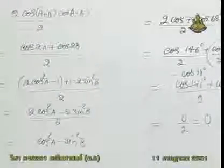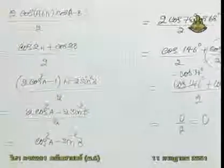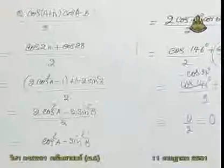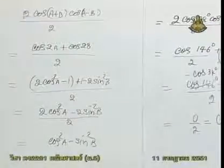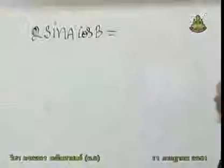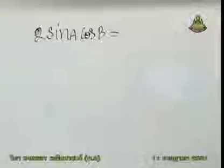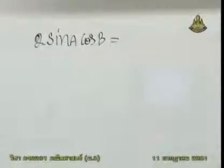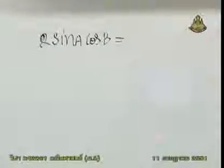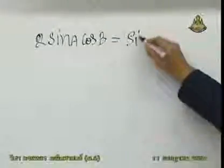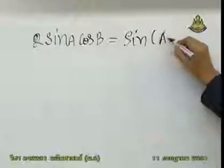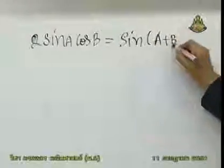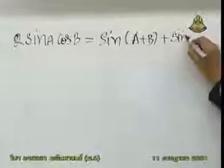สรุปหลักหลักก็คือ เราต้องให้ได้ว่า 2 sin a cos b ก็คือ sin(a+b) บวก sin(a-b). ทบทวนกันใหม่ดีครับ ว่า 2 sin a cos b ก็คือ sin(a+b) บวก sin(a-b). คุณต้องเขียนให้ได้ว่า sin(a+b) บวก sin(a-b).